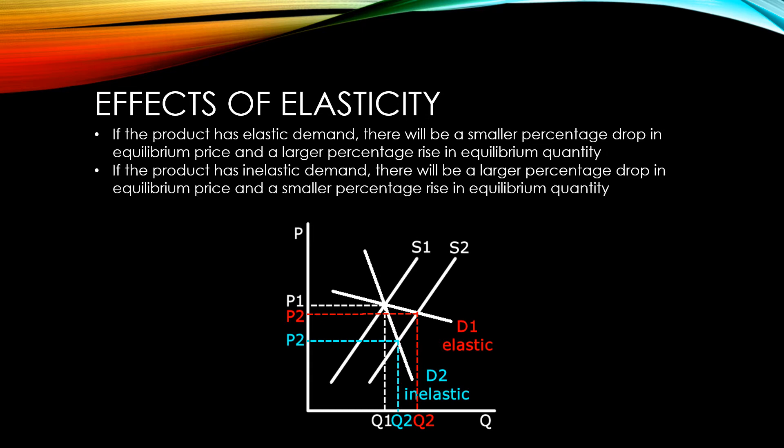If the product has inelastic demand, there will be a larger percentage drop in equilibrium price and a smaller percentage rise in equilibrium quantity. So as you can see, the degree to which equilibrium price drops is dependent on how elastic the demand for the product is.